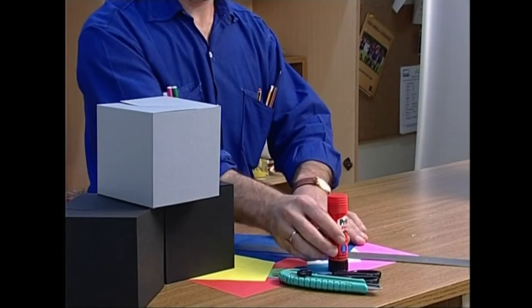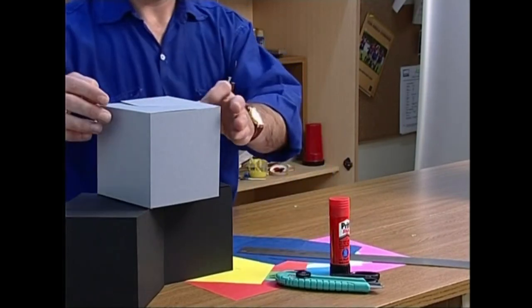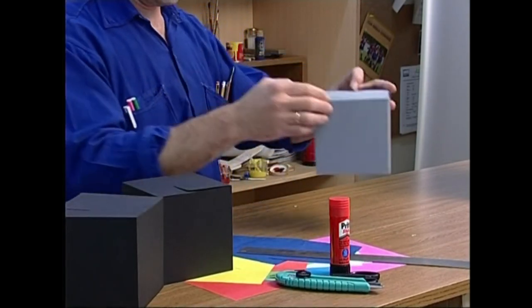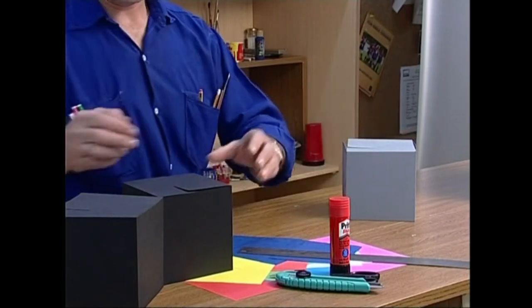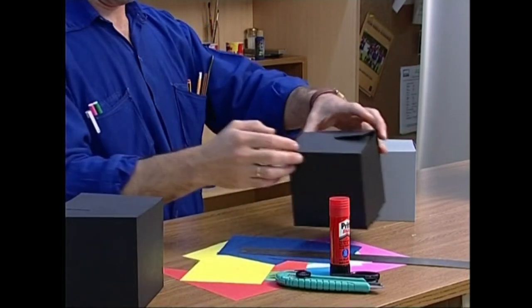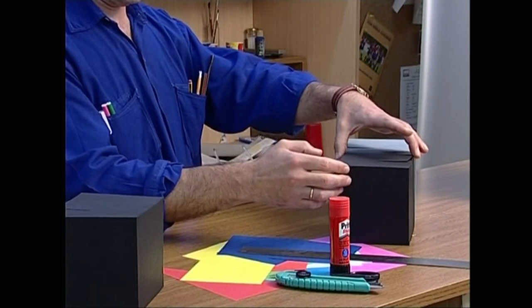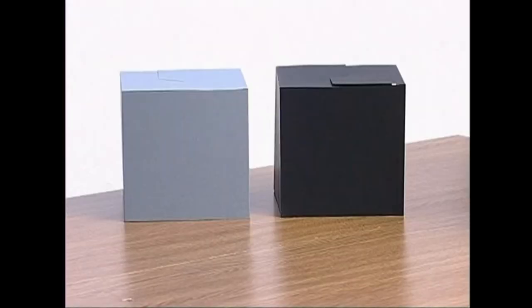Ea bada, azteko kartoizko bi kubo hartuko ditugu, beltz bat eta grisa. Bata bestearen ondoan jarri eta arretaz begiratuko diegu. Ez altzai zue iruditzen beltza grisa baino sendoagoa? Hori horrela gertatzen da, beltzak objektuen formak nabarmendu egiten dituelako.